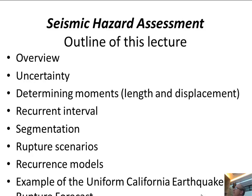I'll talk about these points: the overview, uncertainty, and determining moments. We've already talked about this once, so I'll go quickly through that. Recurrence interval and segmentation we've also talked about, so I'll move through those quickly. We'll discuss rupture scenarios, recurrence models, and then come back to the Uniform California Earthquake Rupture Forecast as an active example.